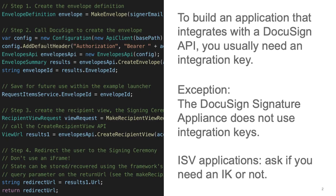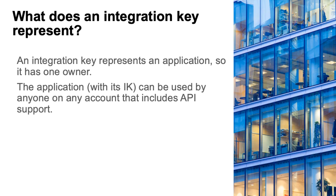To build an application that integrates with DocuSign via one of our APIs, you usually need an integration key. There are some exceptions. The DocuSign Signature appliance does not use integration keys, and there are some Connect Webhook applications that don't need integration keys either. If you're planning to use an application from an independent software vendor, an ISV, ask the ISV if they'll be supplying the IK or if you will need to. I'll discuss more about ISV applications later in the video.